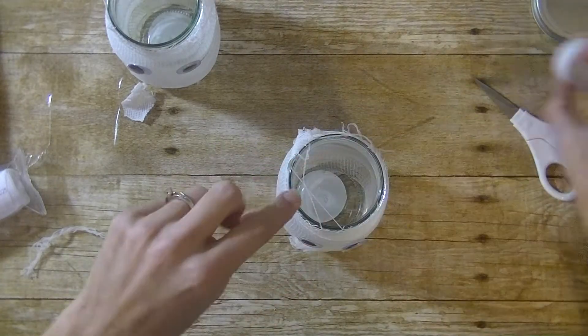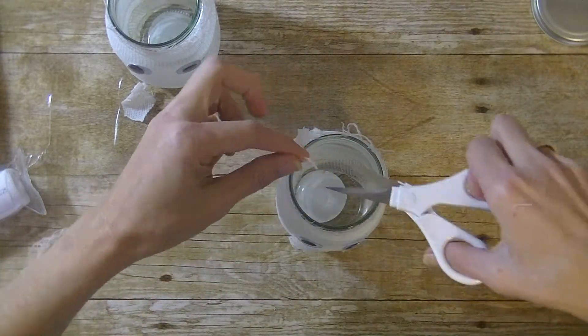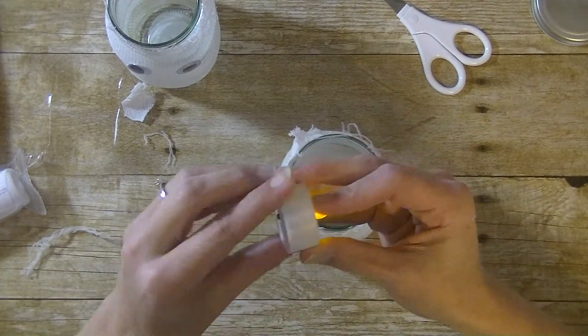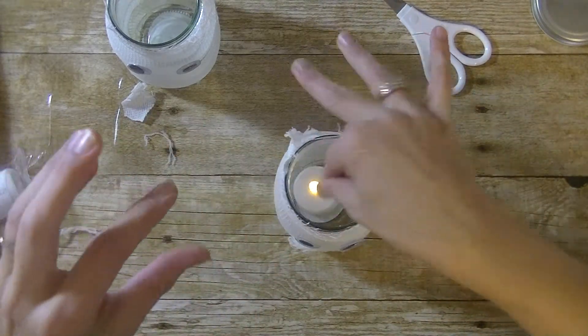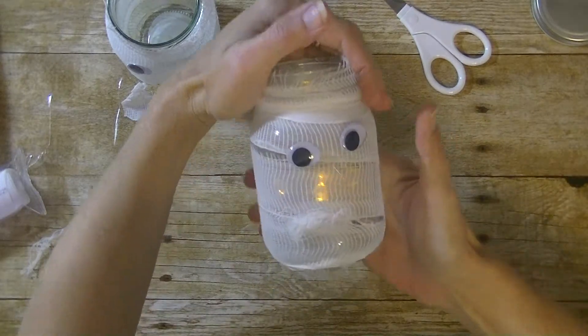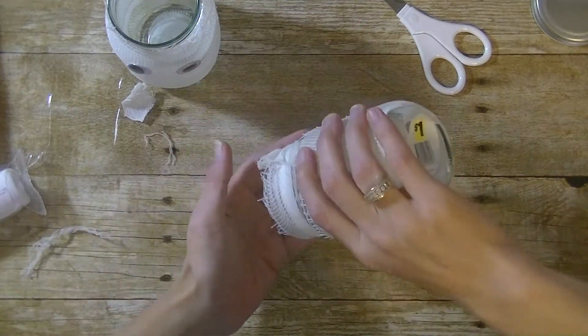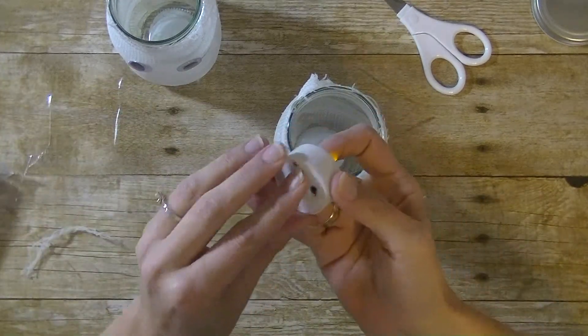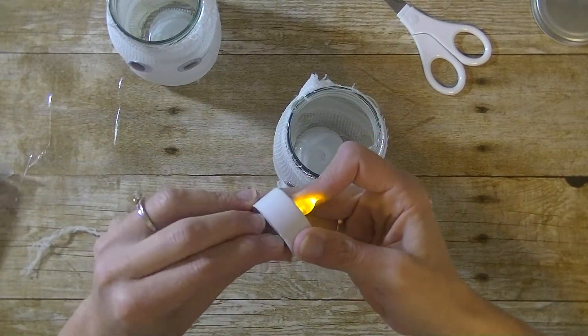Just take a little battery operated tea light. I'm going to go ahead and cut off the stragglers that's going across the top. Battery operated tea light and plop it in there. You'll have a little mummy luminary or a ghost luminary. Again, if you want to use a real candle, you want to use a real jar. But I like using these. They're inexpensive. I don't need to worry about them.